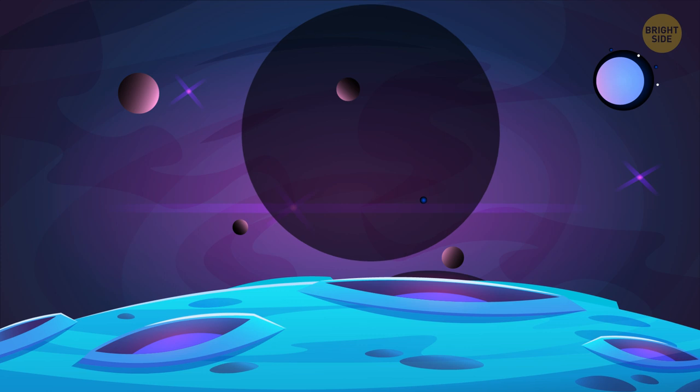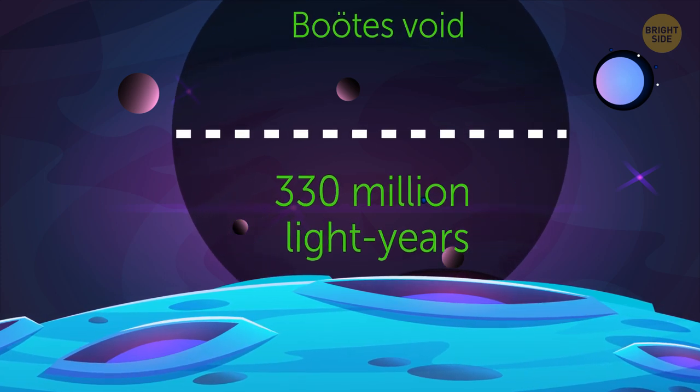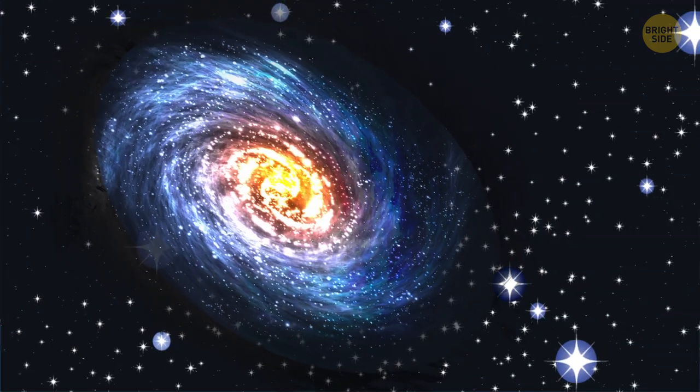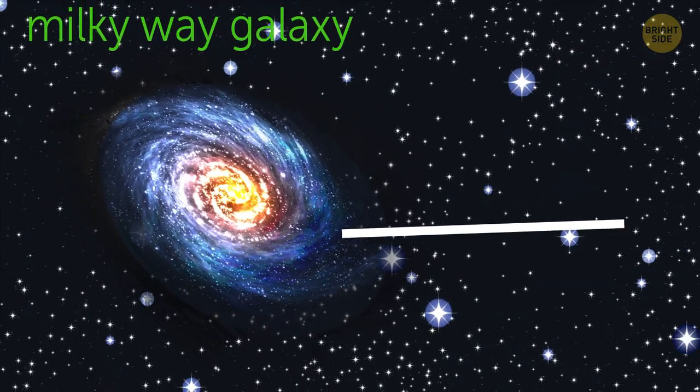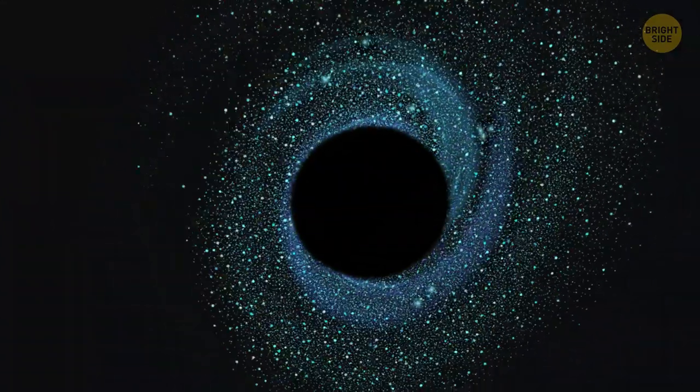I'm talking about things like the Boötes Void, which is nearly 330 million light-years in diameter. That's like 132 times the distance between us and our nearest neighbor, the Andromeda Galaxy. And it has little to no matter in it.